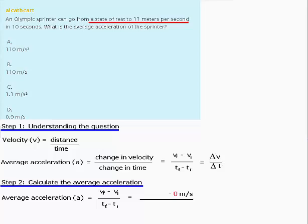And the Olympic sprinter goes to 11 meters per second. Therefore, our final velocity is 11 meters per second.